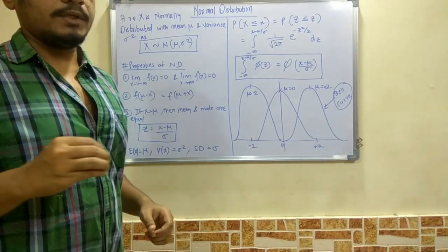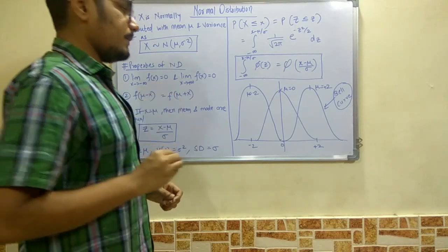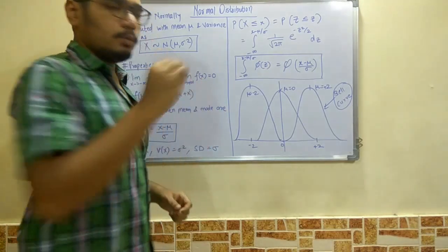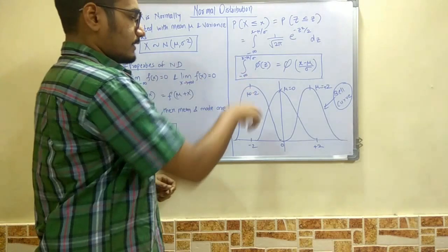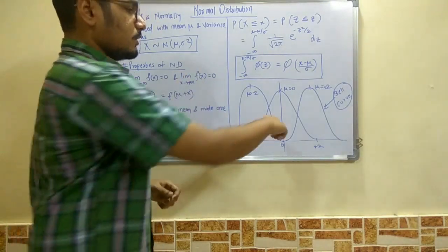In normal distribution, all the curves are bell-shaped; no other curves would be there. Next we have μ = -2 for this side and μ = +2 for the positive x-axis. All of this is a bell-shaped curve for normal distribution.